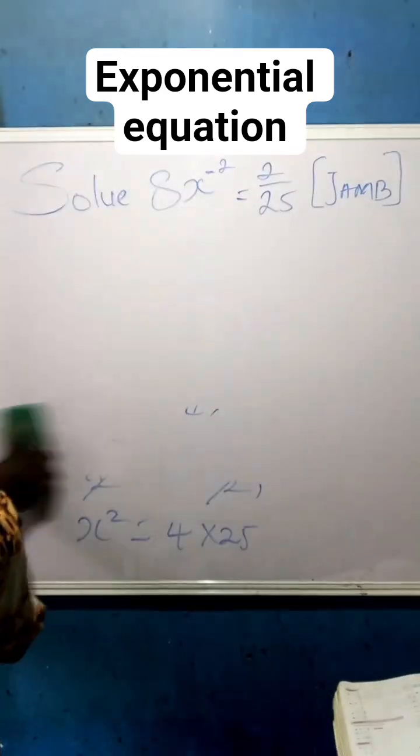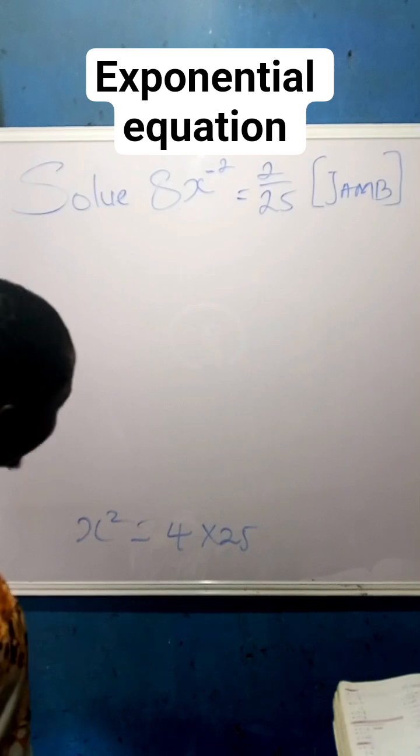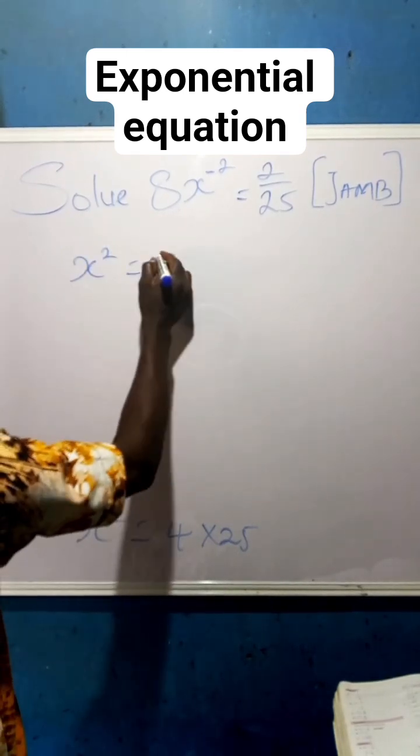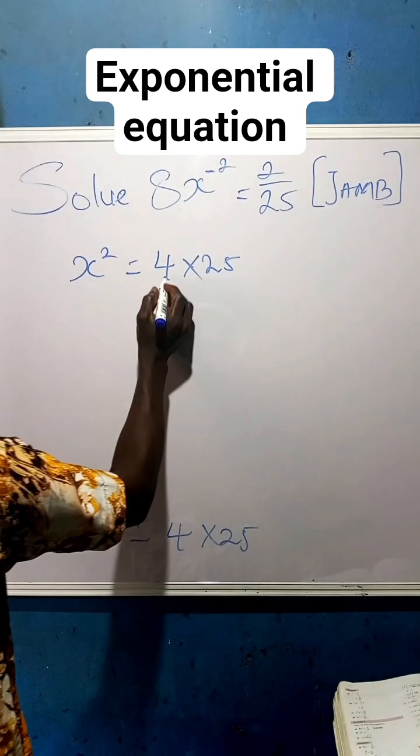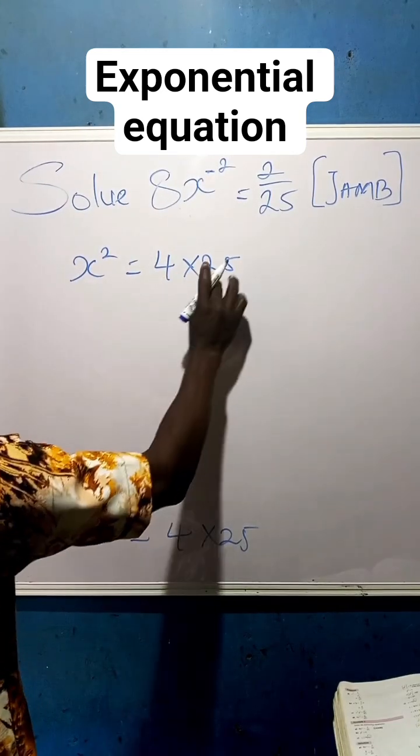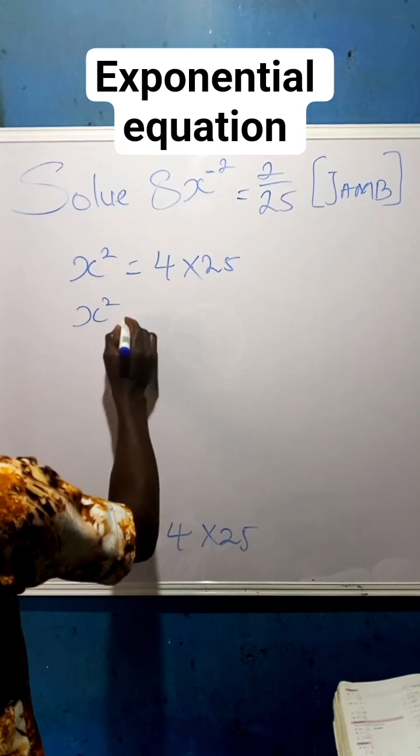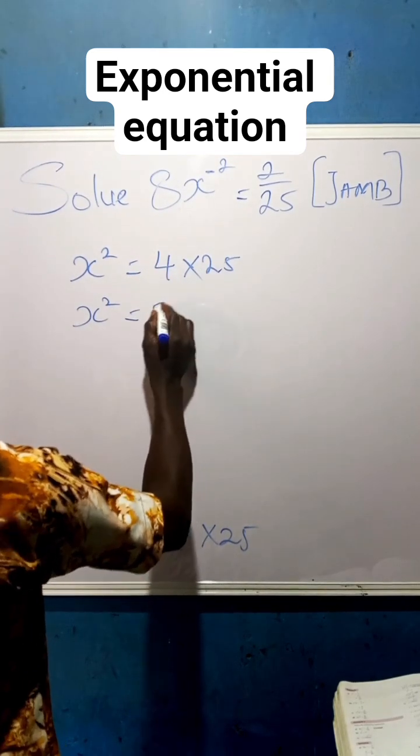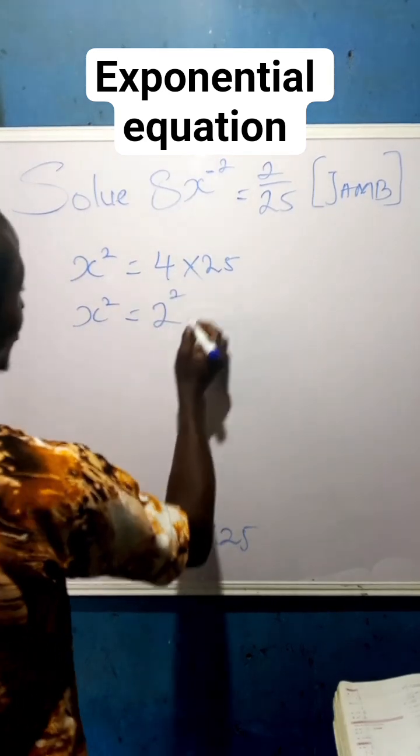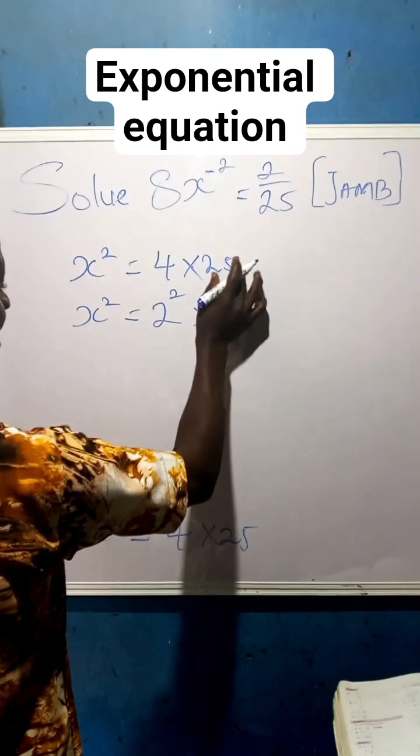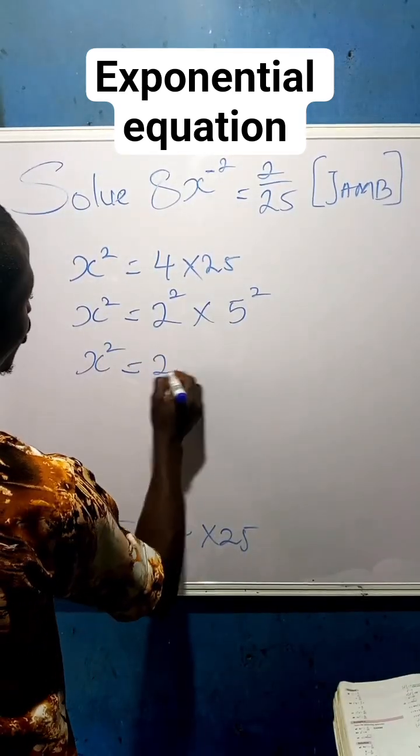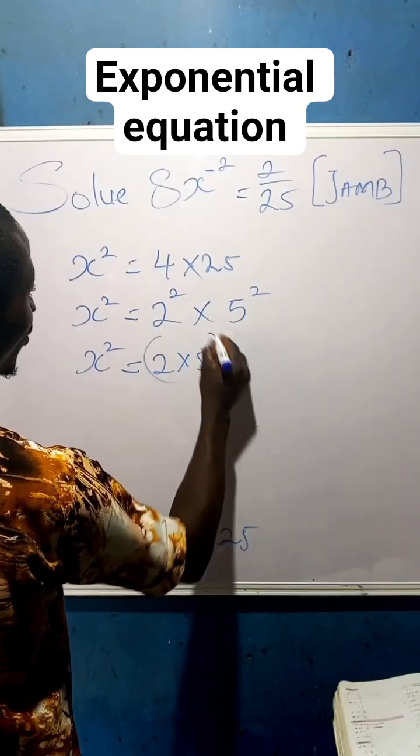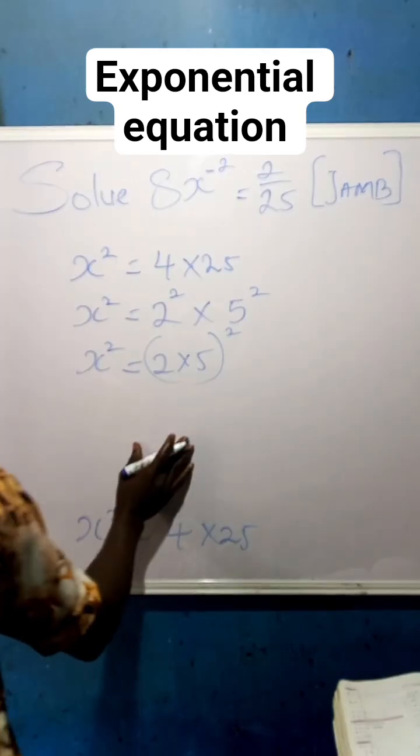Now, what I want to do next is, we can find out that this is our perfect square, equals to 4 times 25. We can find out that this 4 here have a perfect square, and 25 have a perfect square, so that we now have x squared equals to 2 times 2 times 5 times 5, which is 2 times 5 all in square. This is our law of indices.